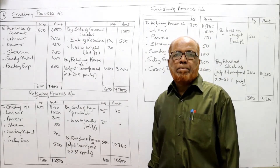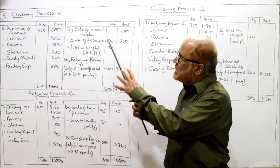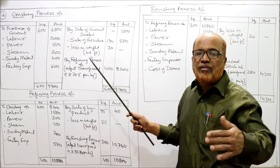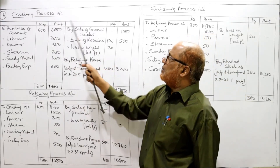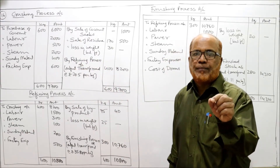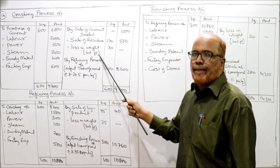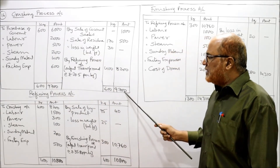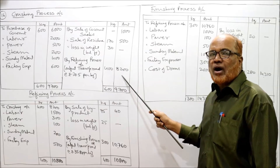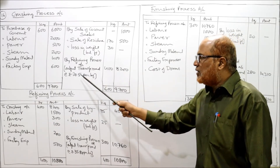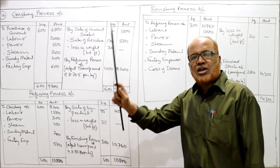The remaining 30 kilograms is assumed as loss in weight — not specified in the problem but we conclude: 600 minus 170 gives 430, but only 400 is produced, so remaining 30 is loss in weight — balancing figure. Take the total on the debit side: rupees 9700. From 9700 subtract 1000 and subtract 500; balancing figure is rupees 8200. This is the value of output in the crushing process. 8200 divided by 400 gives rupees 20.50 per kilogram — cost at the first stage.